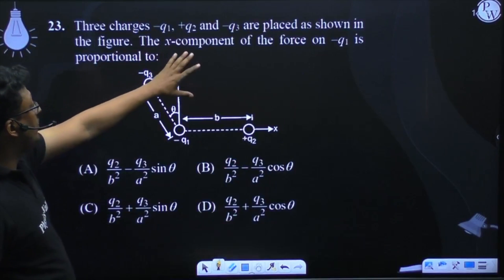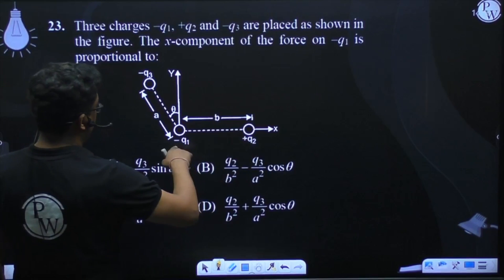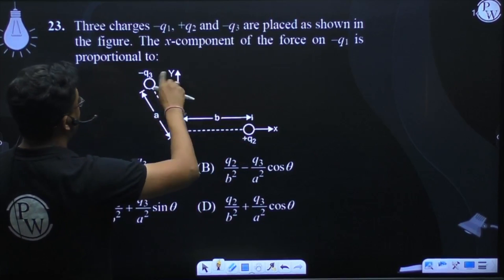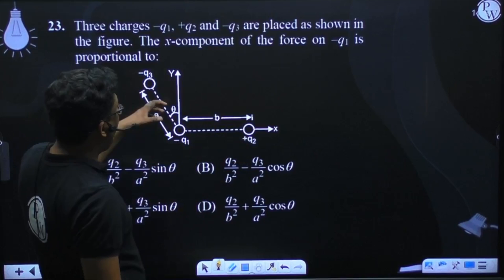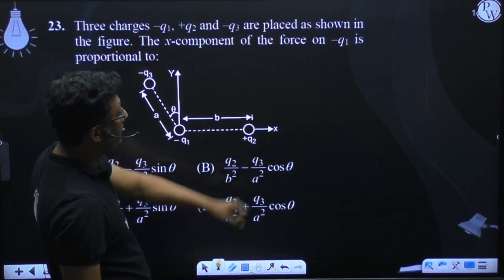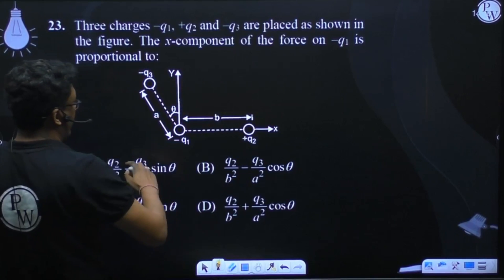Three charges q1, q2, and q3 - minus q1, plus q2, and minus q3 - are placed as shown in the figure. The x-component of the force on minus q1 is proportional to what?